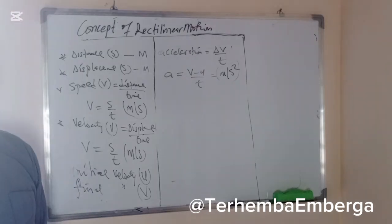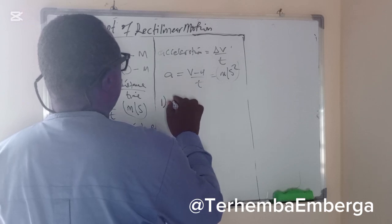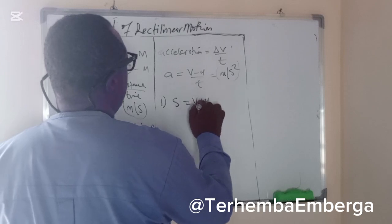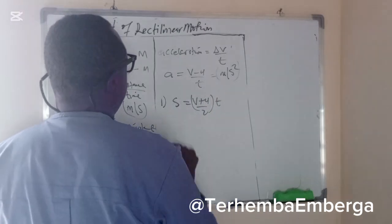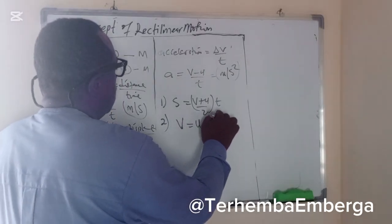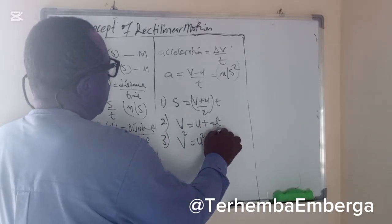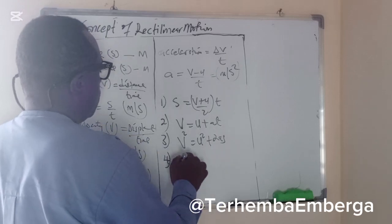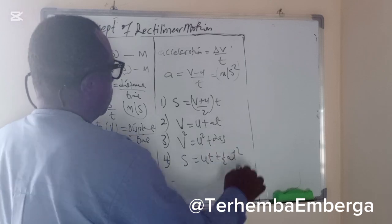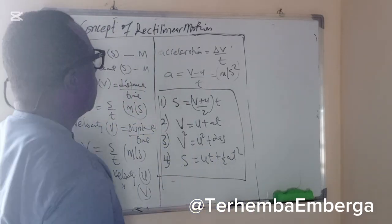First of all, let's list these equations. One: s is equal to (v plus u) over 2 times t. Two: v is equal to u plus at. Three: v squared is equal to u squared plus 2as. And four: s is equal to ut plus half at squared. These are the equations of motion that we want to derive.